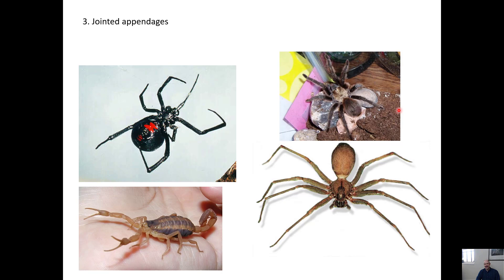Another adaptation for life on land is jointed appendages. Even aquatic arthropods like lobsters have legs, so early animals coming out of the water already had these appendages to invade land. If you've ever tried to chase a spider, you know how well jointed appendages work for locomotion and climbing. All the arthropods shown here — black widow spiders, brown recluse spiders, tarantulas, and scorpions — are all native to Arkansas.